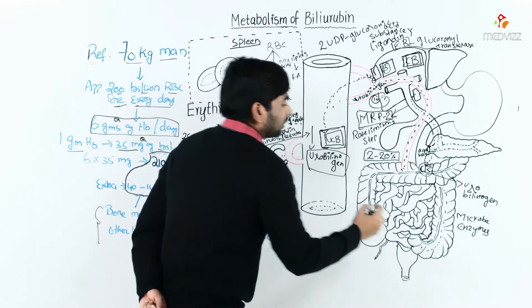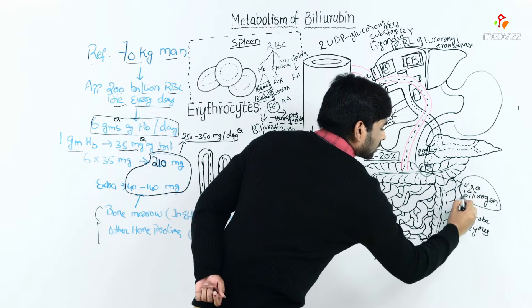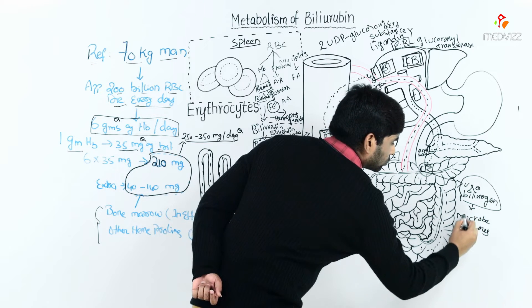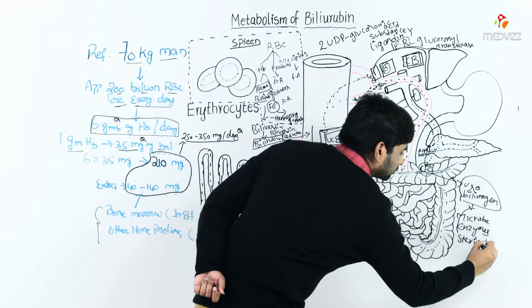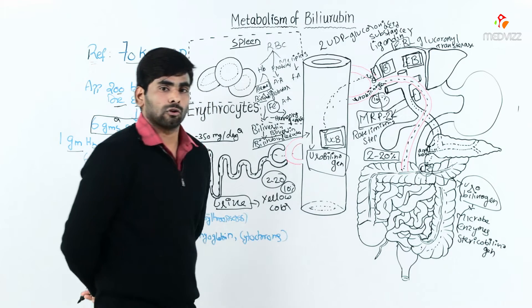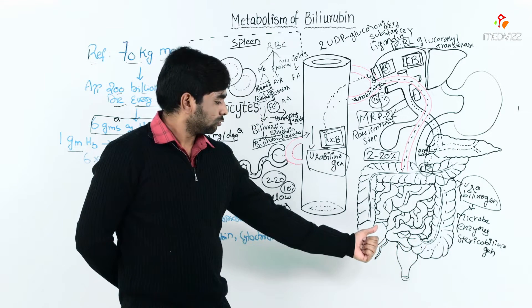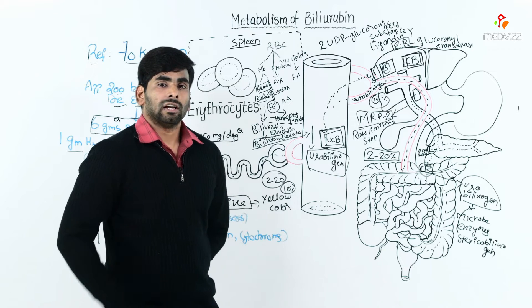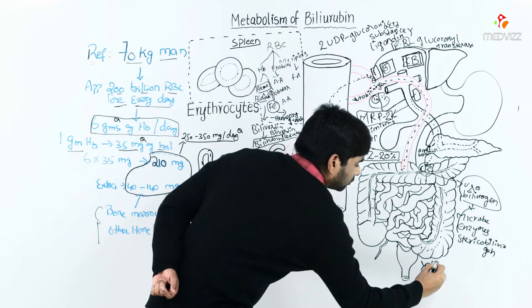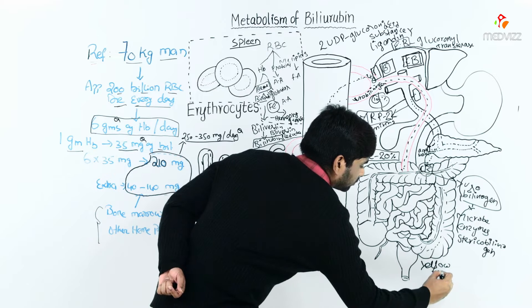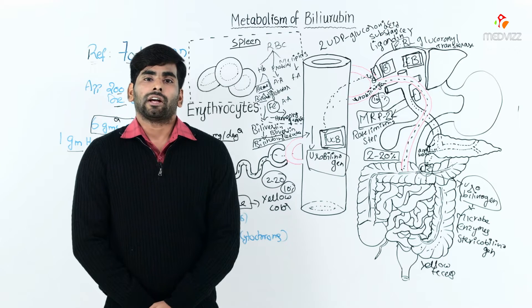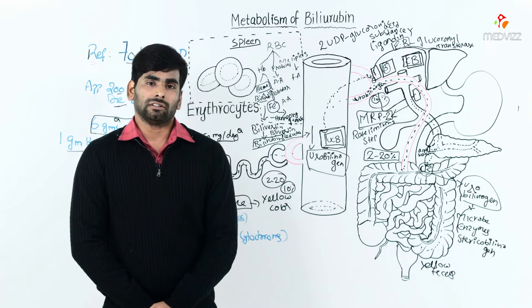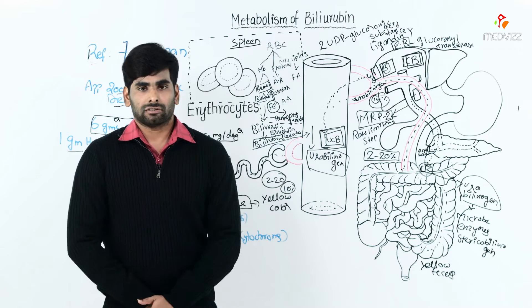The major part of urobilinogen remaining in the large intestine further converts into stercobilinogen. Stercobilinogen is excreted through feces and gives feces their yellow-brown color. This is how bilirubin is secreted, dealt with in the liver, and excreted through different systems.